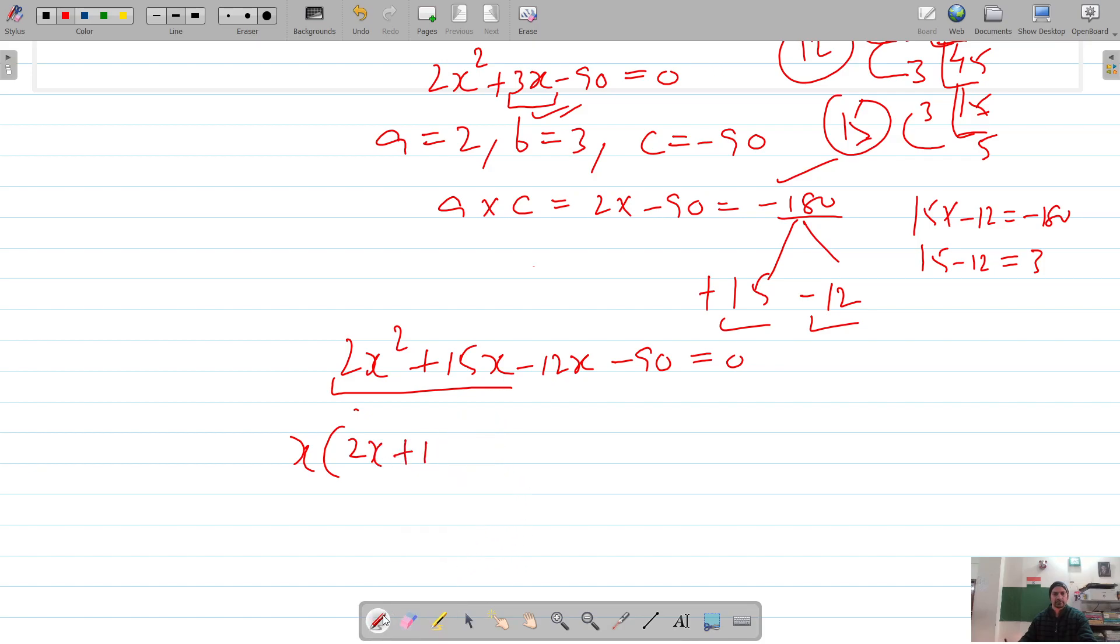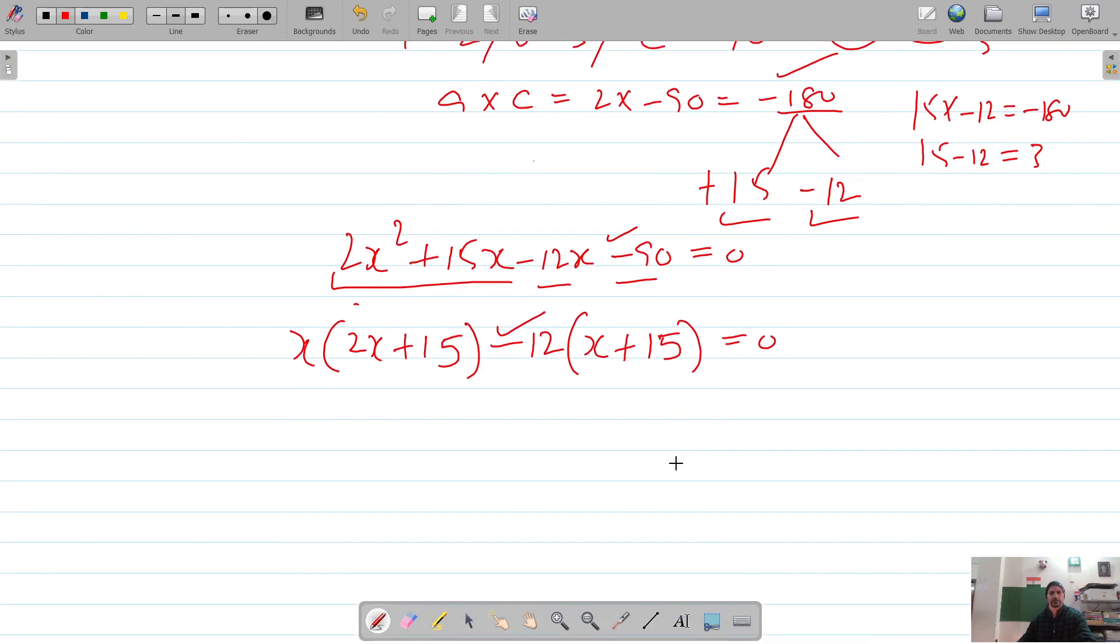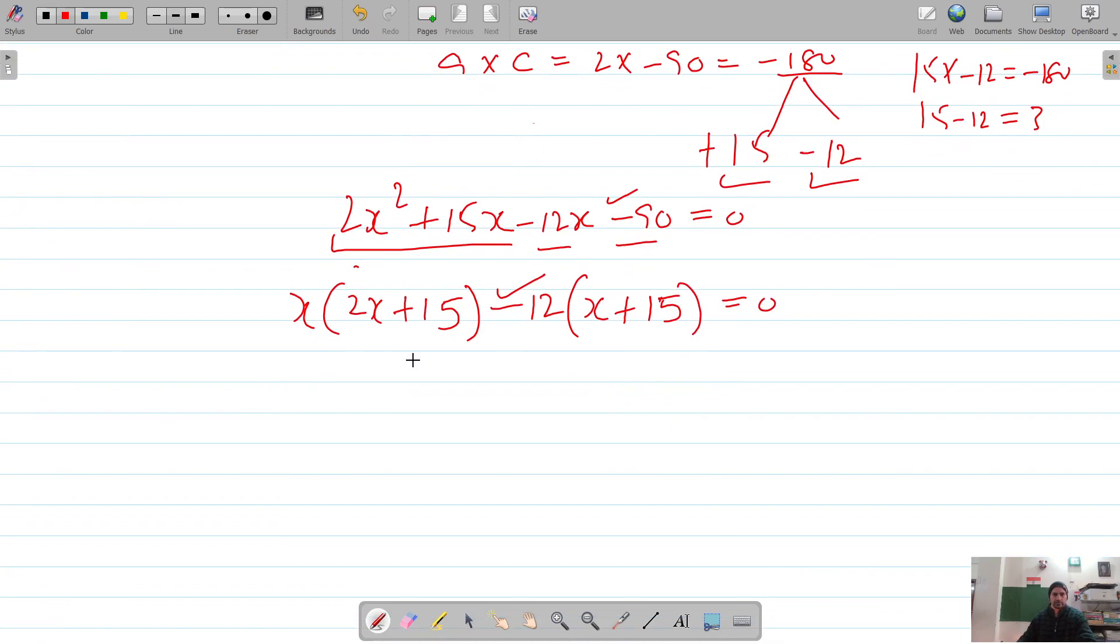2x plus 15, and for them, common is negative 6. So it's 2x plus 15 times x minus 6 equals zero.